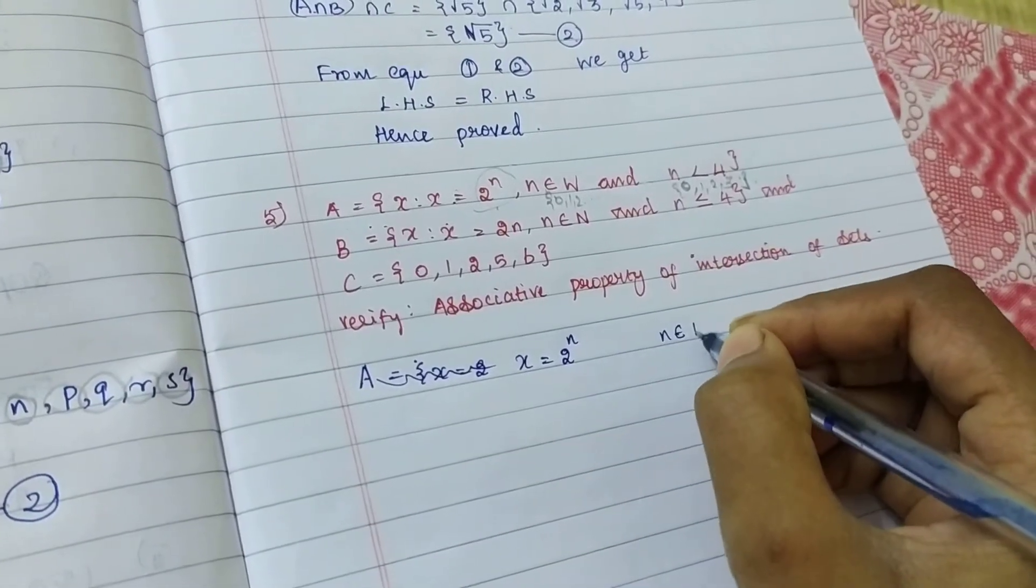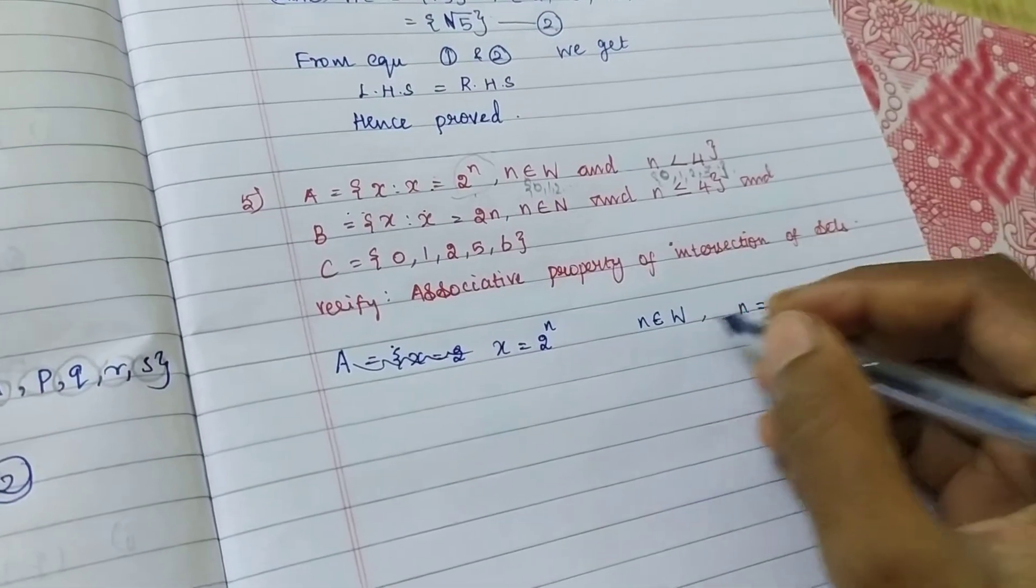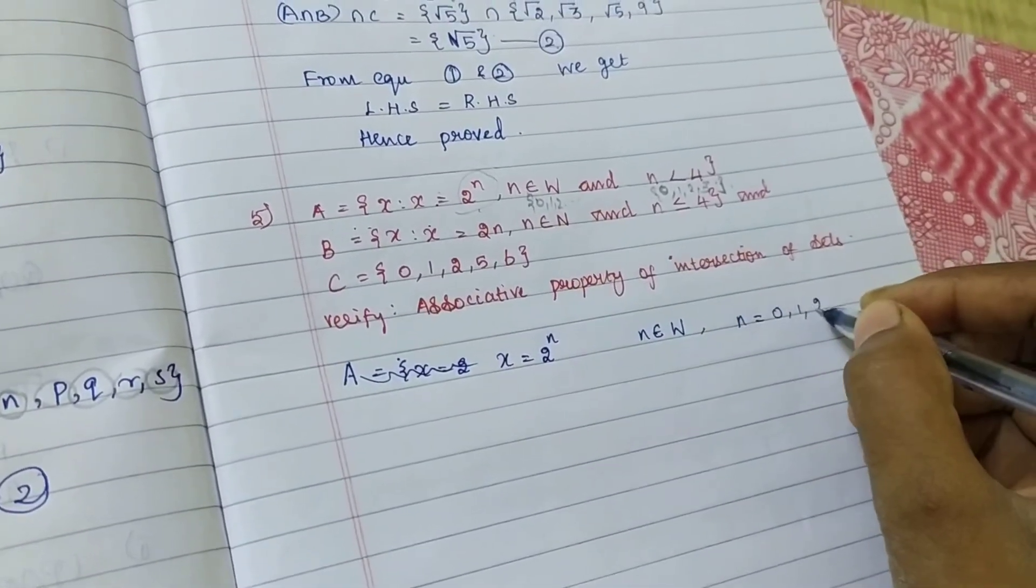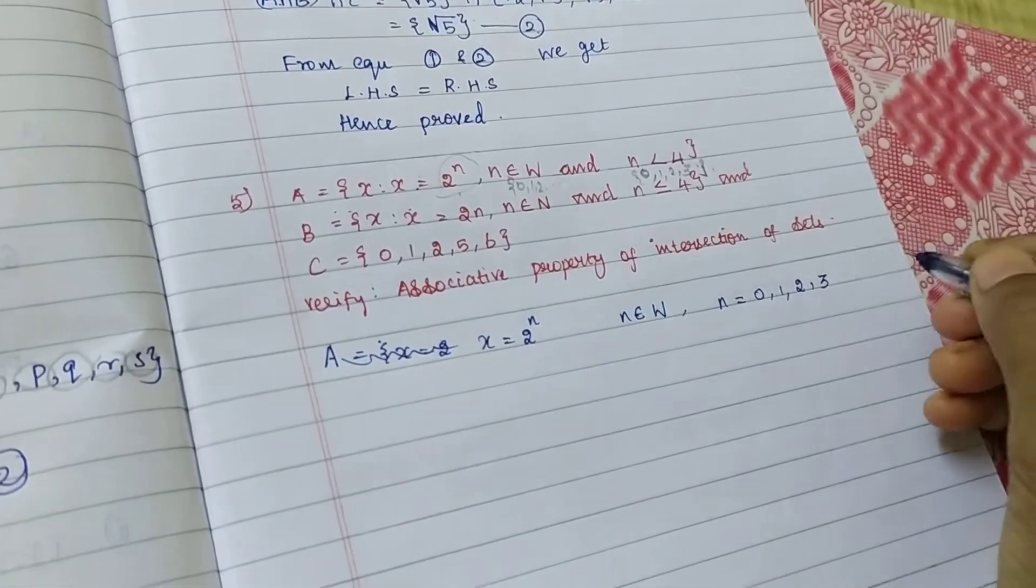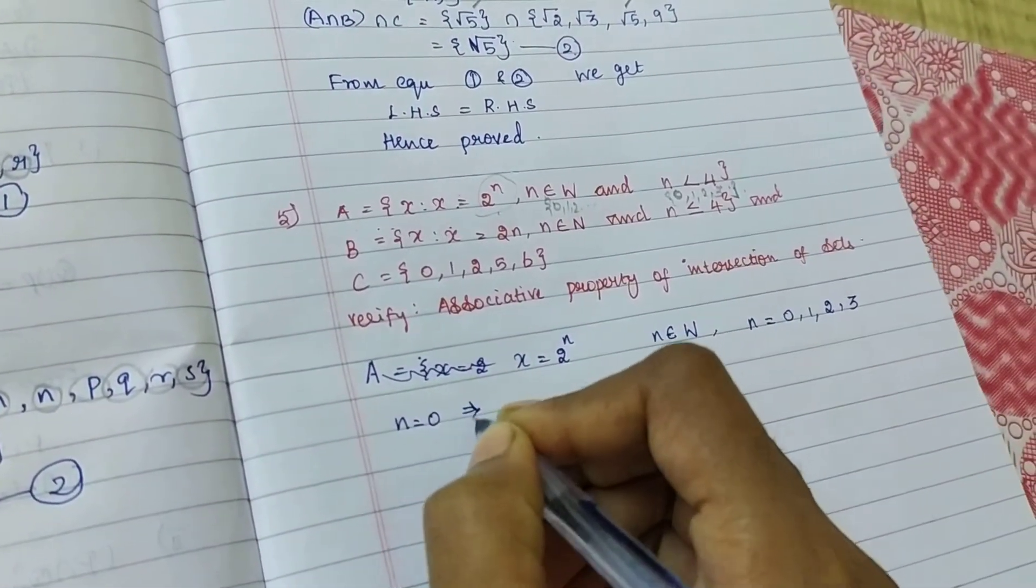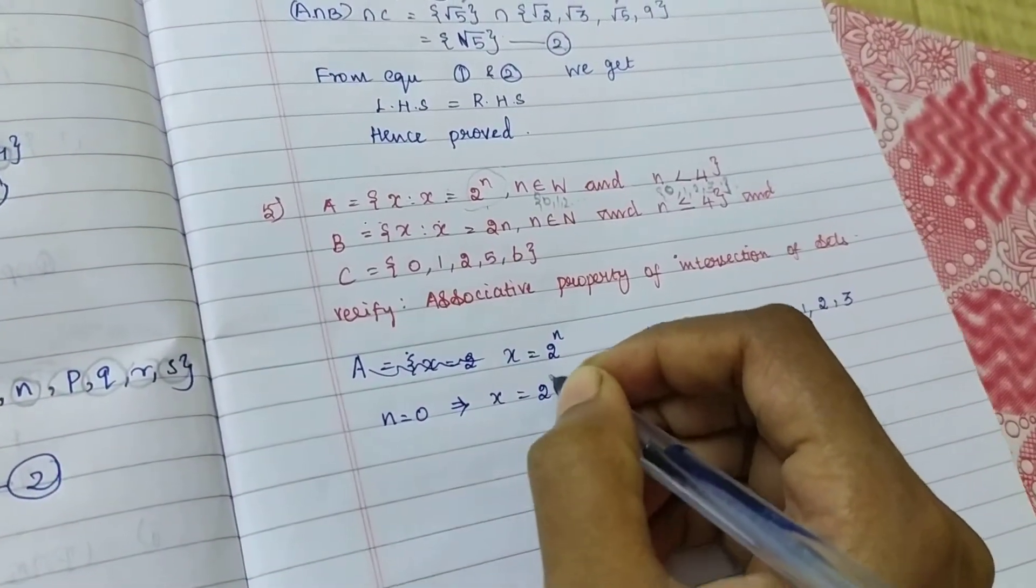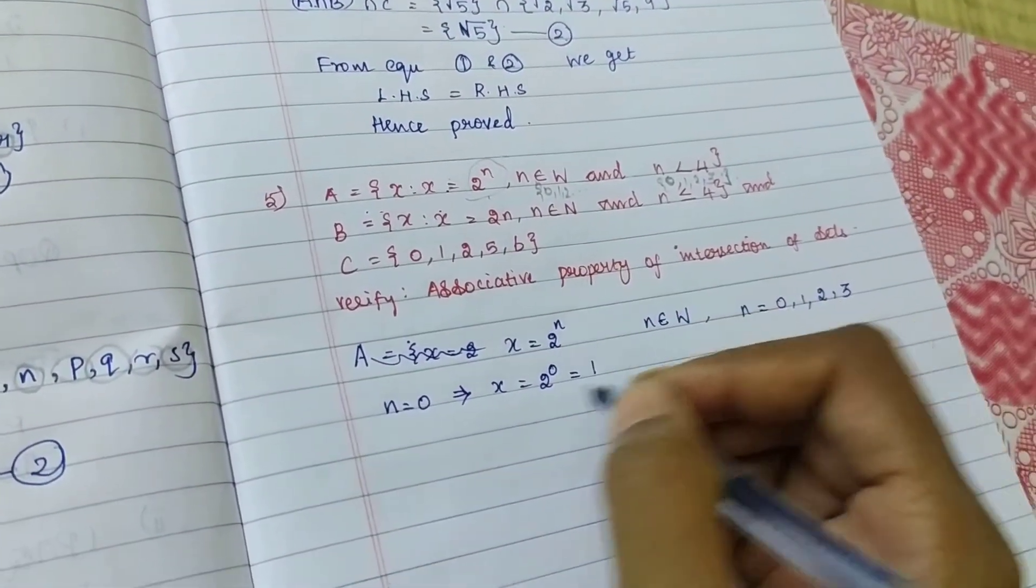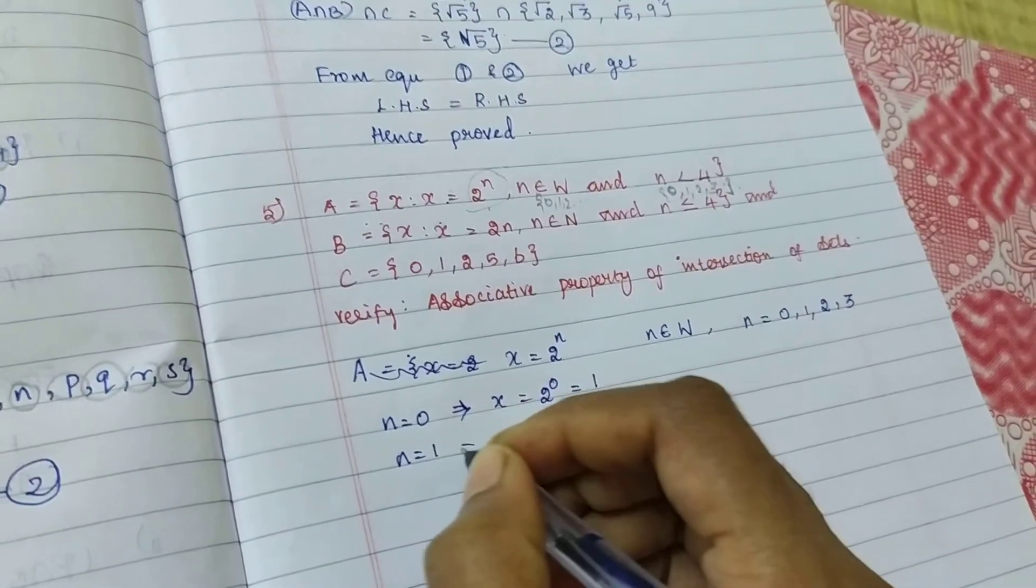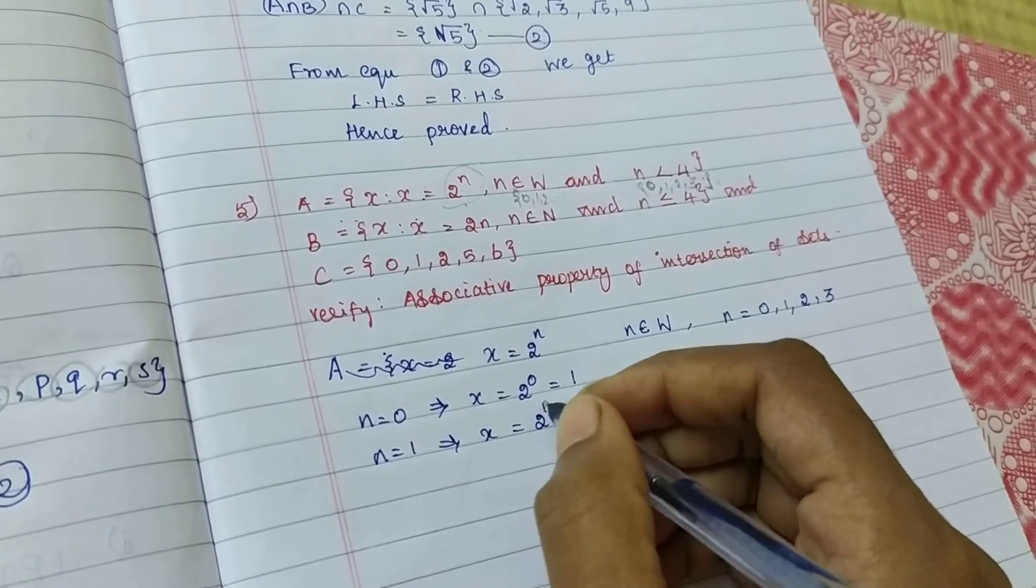So, N equal to, now only we find out, because the whole number, 0, 1, 2, 3. So, I am substituting. My N equal to 0. Then, my X value. Anything power 0 means 1. We already learned. So, N equal to 1.